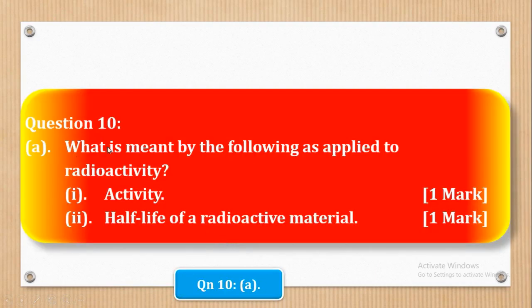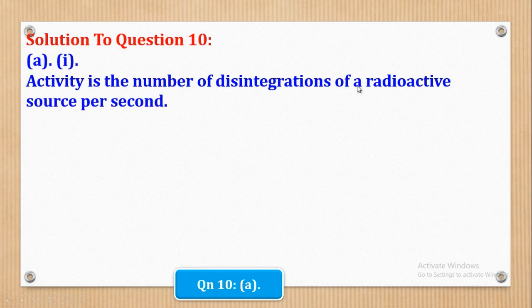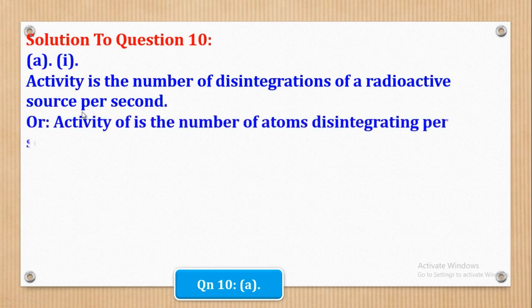So let's start with Question 10 Part A. Part A says what is meant by the following as applied to radioactivity: Roman 1, Activity and Roman 2, Half-Life of a Radioactive Material. So for Roman 1, we shall say that Activity is the number of disintegrations of a radioactive source per second. Alternatively, you can say that Activity is the number of atoms disintegrating per second. So the same but just the language change.